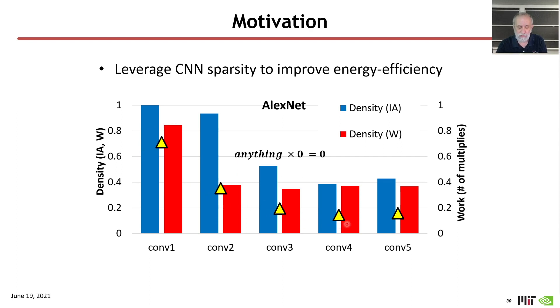densities start going down, and where you're less than 0.2 aggregate number of effectual multiplies. You could see that if you could eliminate those computations, you might be able to achieve a 5x improvement in throughput by eliminating the time that was associated with those computations.